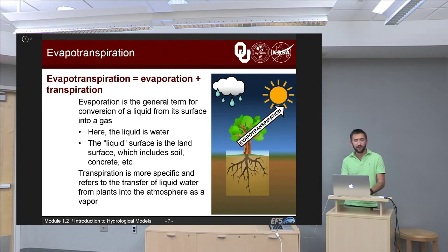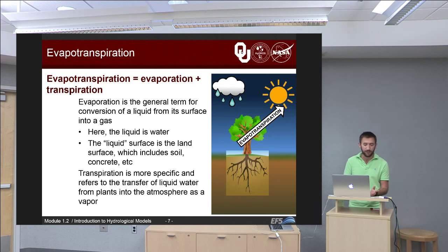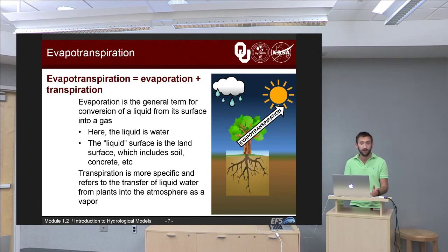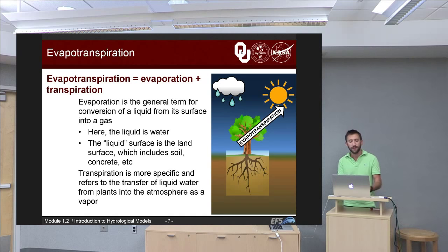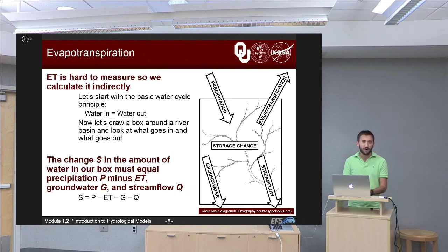Evapotranspiration is just the addition of evaporation and transpiration — we take the two words and put them together into one big long fancy word. Evaporation is the conversion of a liquid from its surface into a gas — that could be a puddle, a rain barrel, a lake, or even a river. The liquid surface can be either the surface of those various reservoirs or the land surface, including soil and concrete. Transpiration is more specific and refers to the transfer of liquid water from plants into the atmosphere as water vapor.